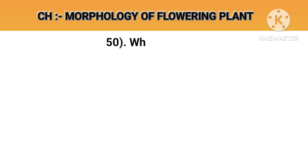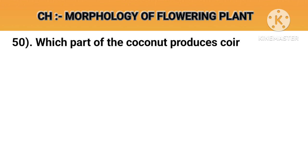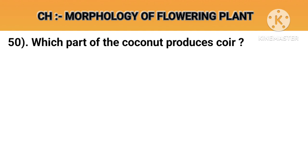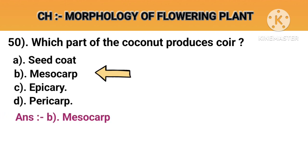Question number 50. Which part of the coconut produces coir? Option A: Seed coat. Option B: Mesocarp. Option C: Epicarp. Option D: Pericarp. Answer B: Mesocarp.